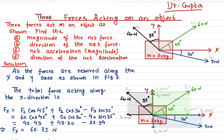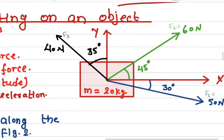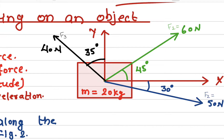Now, in which direction will the object start moving? To answer that, the first thing we need to do is find out the direction and magnitude of the net force. We're going to do that by resolving each force into two rectangular components. Let's start with F1.